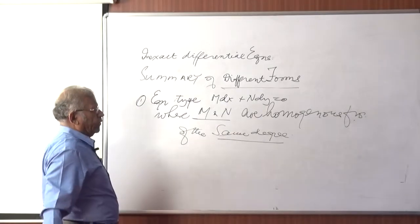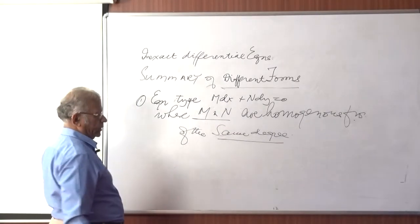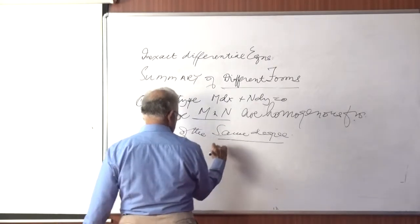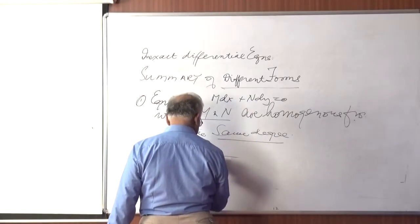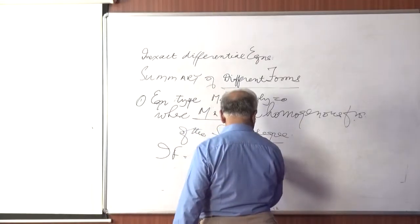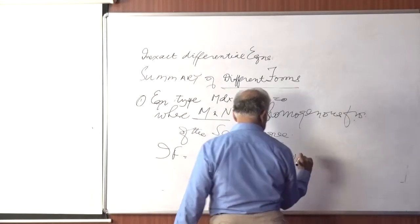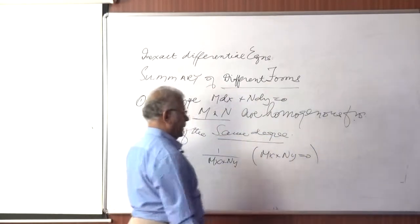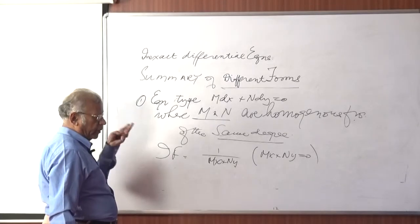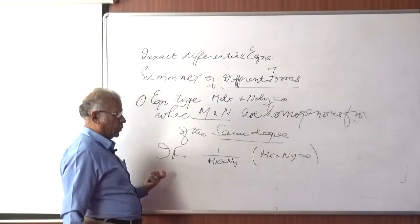Then an integrating factor is IF = 1/(mx + ny), given that mx + ny is not equal to 0 identically. So this is the first type. We have discussed this with problems earlier, but one good snapshot is this one. We now move to the second type.